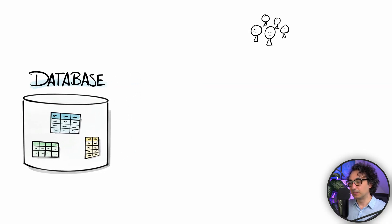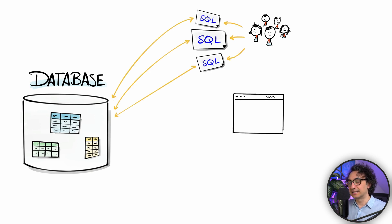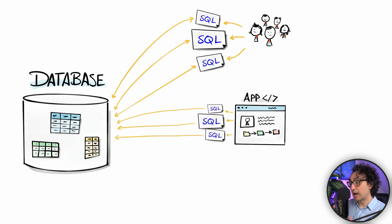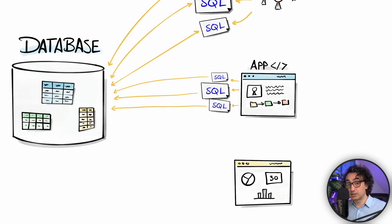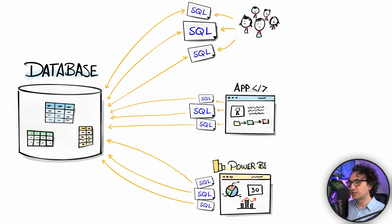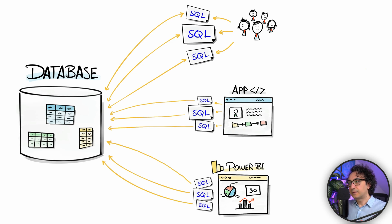In companies, the data is inside the database and multiple people with multiple roles write different SQL queries to talk to the data. Not only employees interact with the database — you could build a website or an application that also interacts with the database by sending different SQL statements. Depending on how many people are using the application, it might generate a really massive amount of SQL queries sent to the database. You might also have tools for data visualization — a dashboard or report created using Power BI or Tableau — used by stakeholders and managers to make decisions, and those tools are also connected to the database and generating SQL.